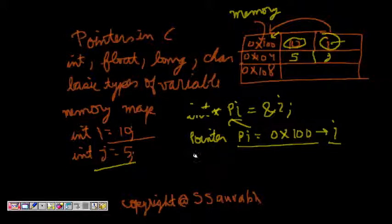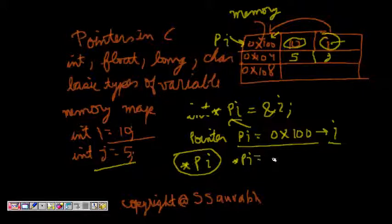Now how to find the value that is stored in the memory location where pi is pointing? We do a dereferencing of the pointer and this is called - this star pi is equal to the value stored in the memory location of 0x100, which is equal to 10.